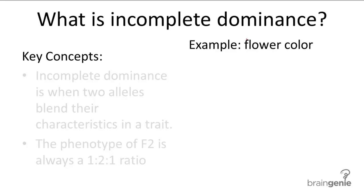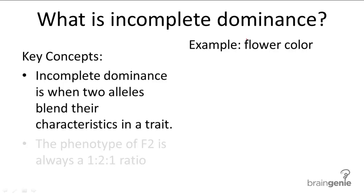Similar to codominance, incomplete dominance occurs when two alleles are not dominant over the other. But rather than both of them showing separately in the same phenotype, the alleles in incomplete dominance are blended together to form a third type of phenotype.